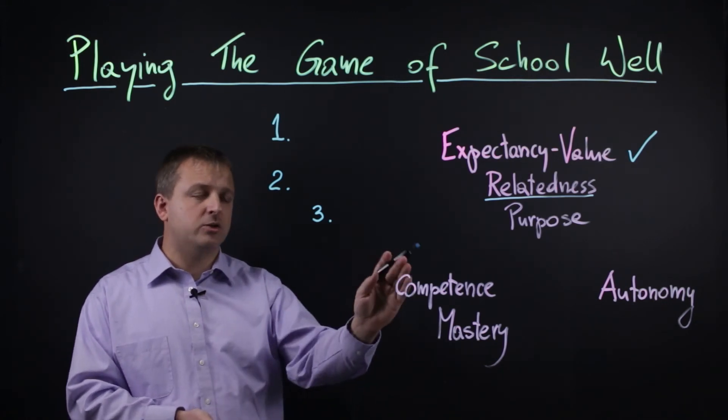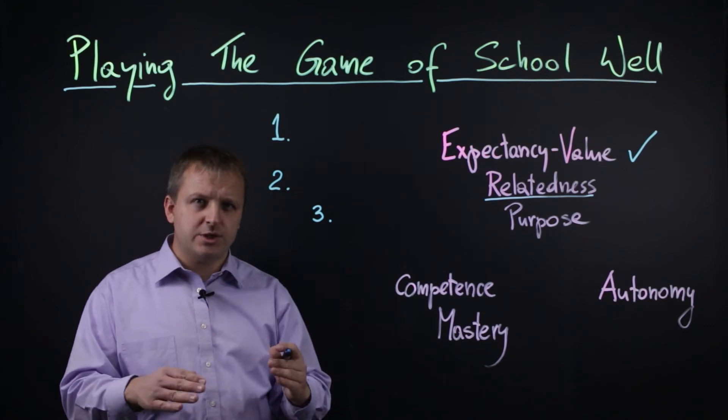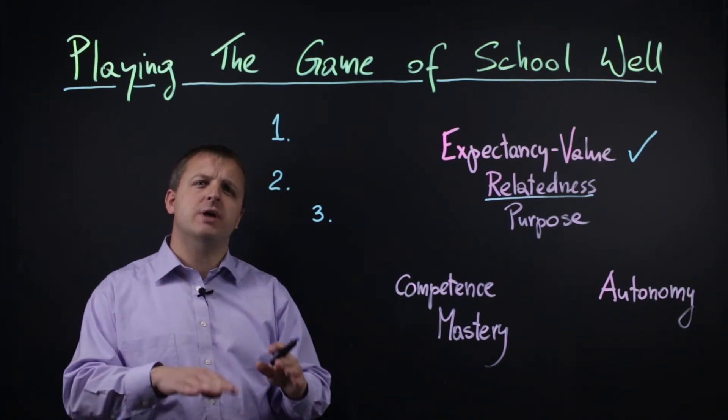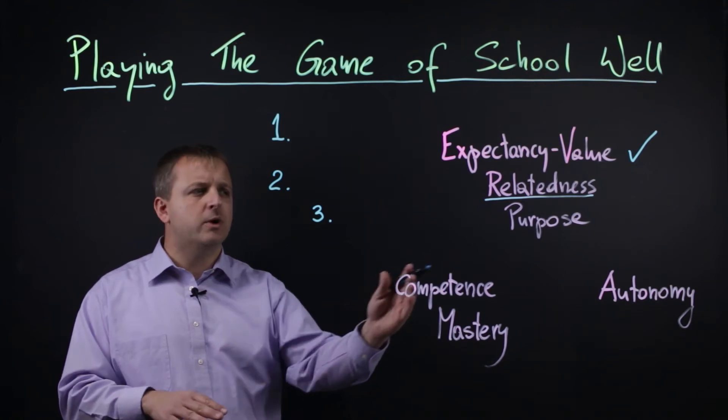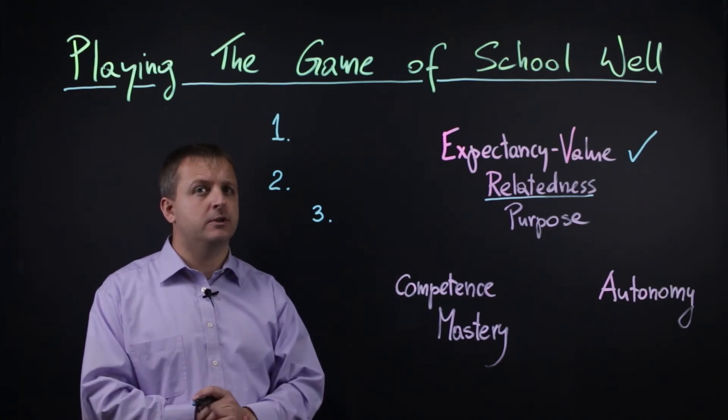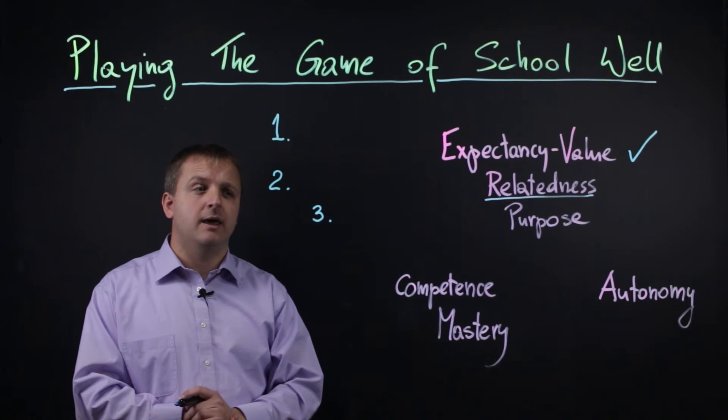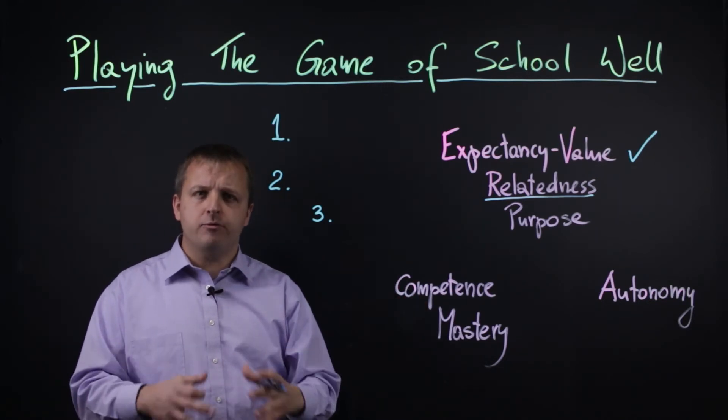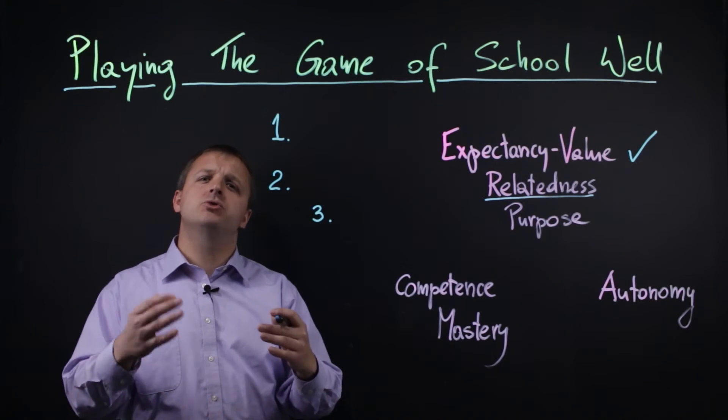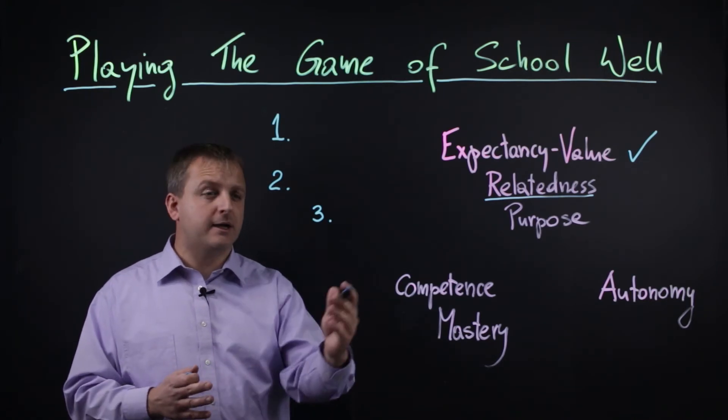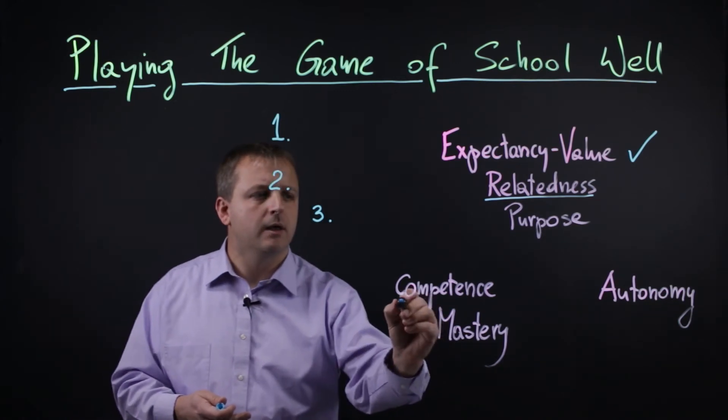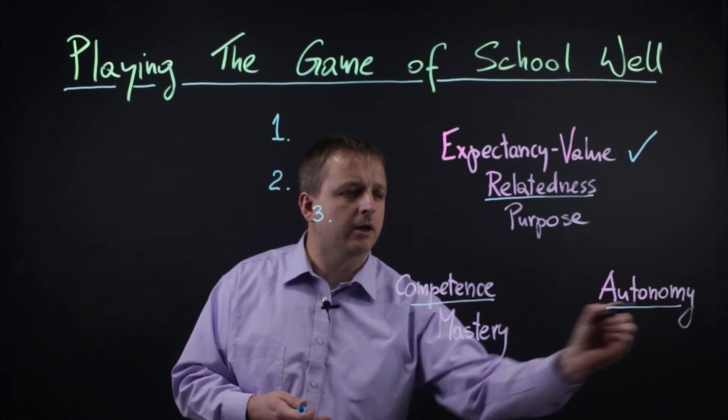Next, Desi and Ryan talk about autonomy. If you have choices in the class, or maybe on a job, you get to choose how you perform the task. You are going to enjoy it more because of this autonomy. And then they talk about competence. Competence means that you are improving yourself. You have opportunities for growth. In a class, you can see that you have learned new things.